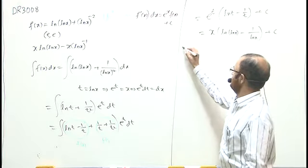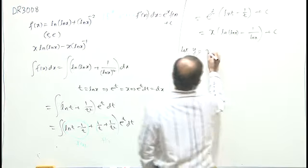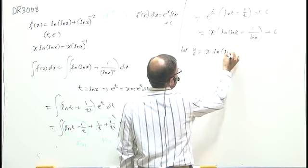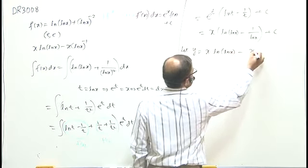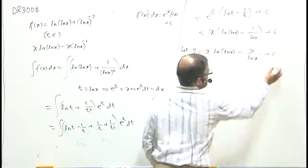This is the anti-derivative of the function. So I will write this as y is equal to x ln of ln x minus x by ln x plus c.